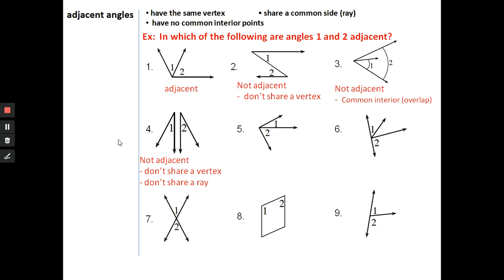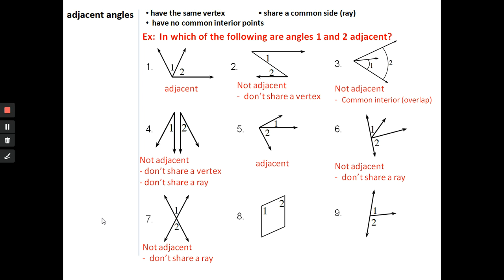Number five: those are adjacent — no overlap, common vertex, common side. Number six: not adjacent — they do have a common vertex, but there are four rays. Number seven: not adjacent — they don't share a ray, they do share a vertex, and there is no overlap, but they don't have a common side.